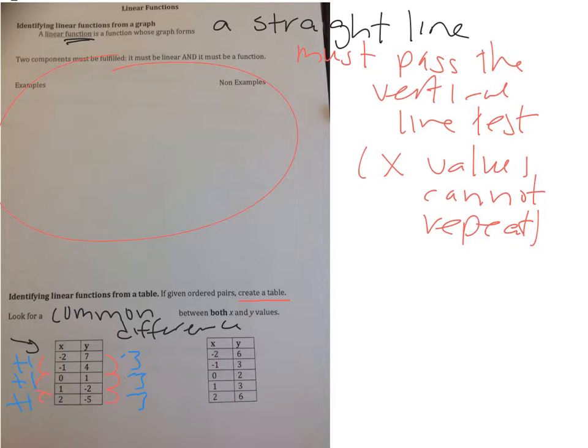Now what's happening with this next table? Negative 2 to negative 1, negative 1 to 0, 0 to 1, 1 to 2—it's going up by 1, so I'm seeing something common on this side. But 6 to 3 is minus 3, 3 to 2 is minus 1, 2 to 3 is plus 1, and 3 to 6 is plus 3. This is not going to be a linear function because we don't have a common difference with both the x and the y.